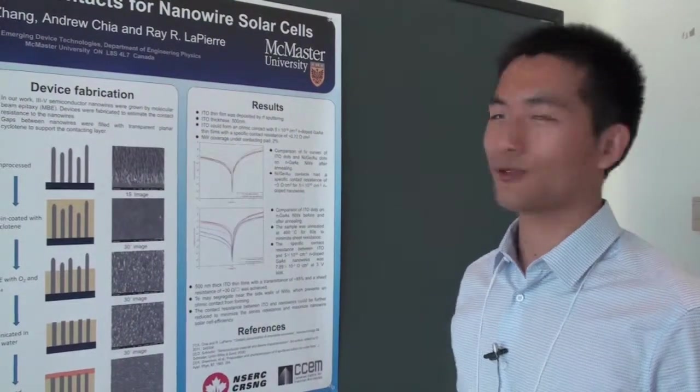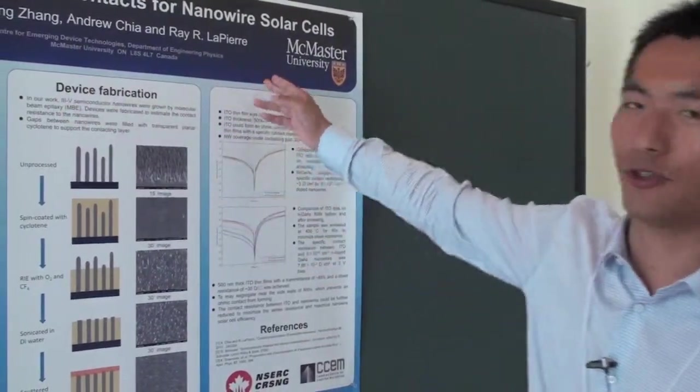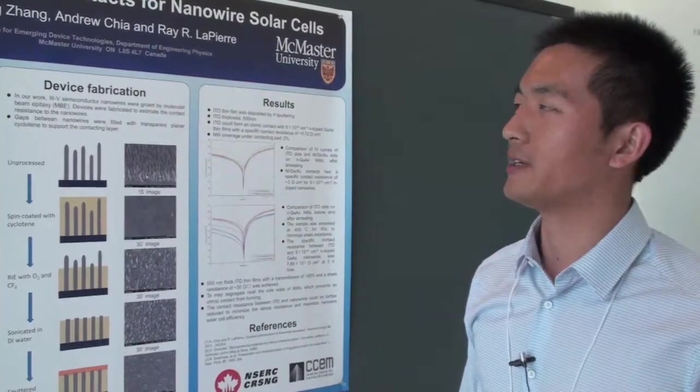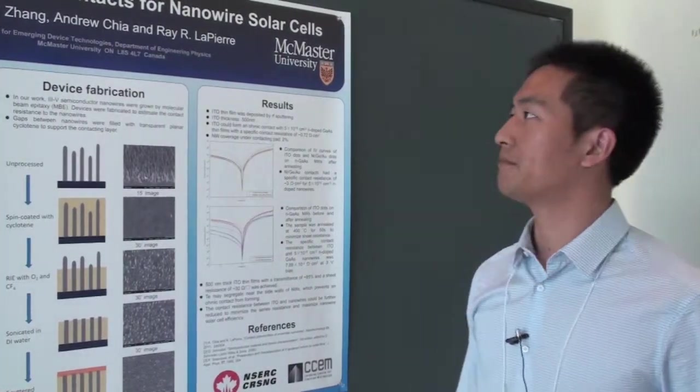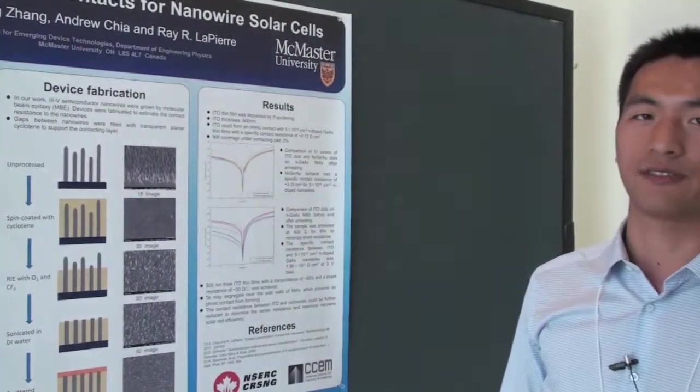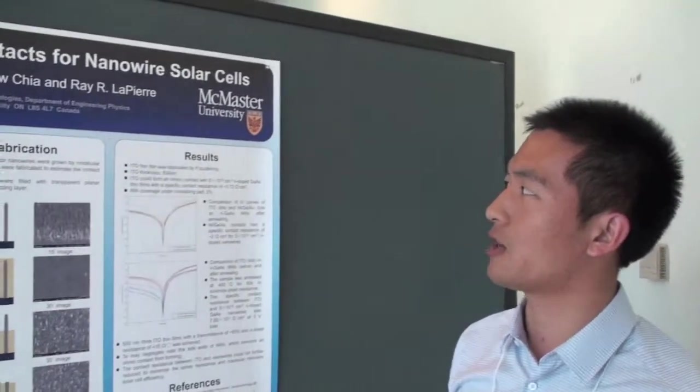Hi, my name is Andrew Ching. I'm in the LaPierre group at McMaster University. My project is the fabrication of low resistance front contacts for nanowire solar cells.